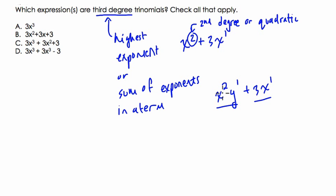And there is more than one variable. So we look at the sum of the exponents, 2 and 1, and the degree here is 3. 2 plus 1 is 3. So this is a third-degree or cubic polynomial.